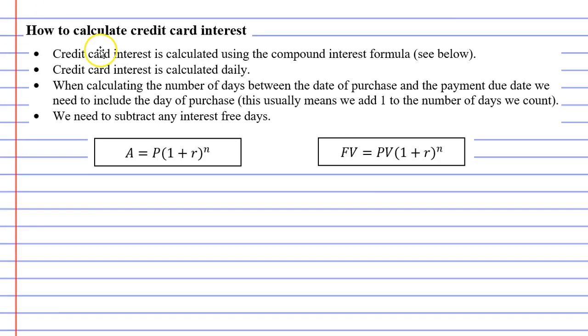Okay, so the first dot point says that credit card interest is calculated using the compound interest formula, so more likely than not it will be compound interest. In fact, in the old syllabus it was simple interest and in the new syllabus I've been told it will be compound interest.